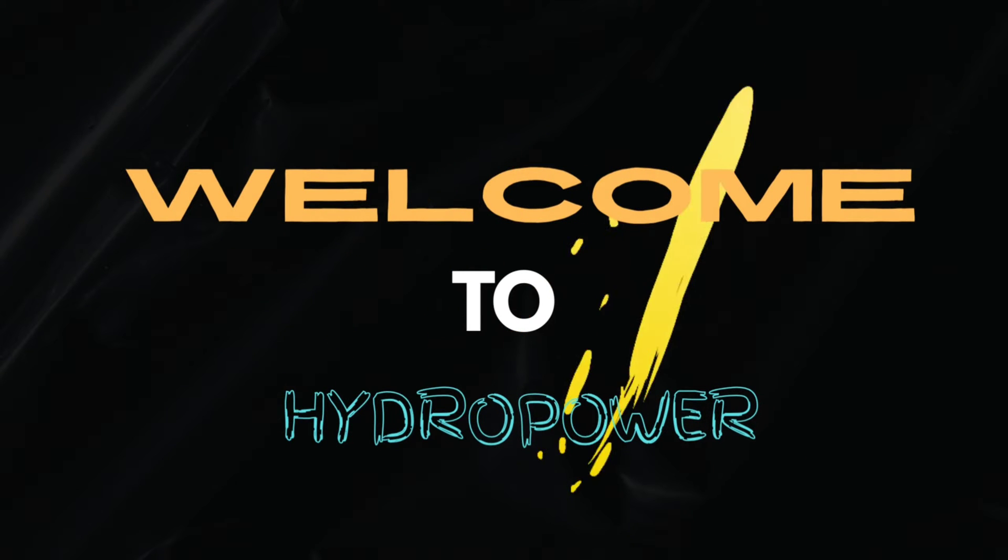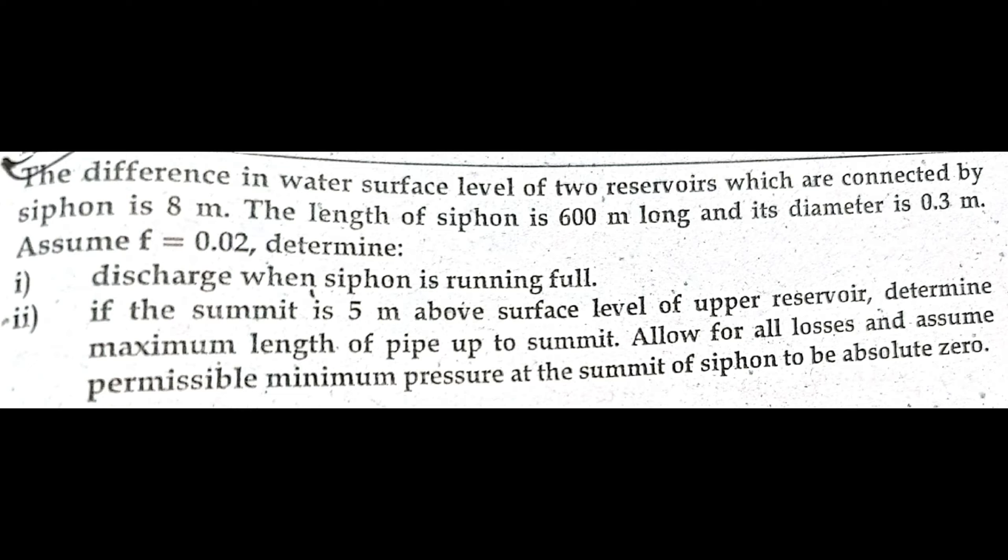Hello everyone, welcome to our channel. Today we will solve a numerical problem related to siphon. The given question is: the difference in water surface level of two reservoirs which are connected by siphon is 8 meters.